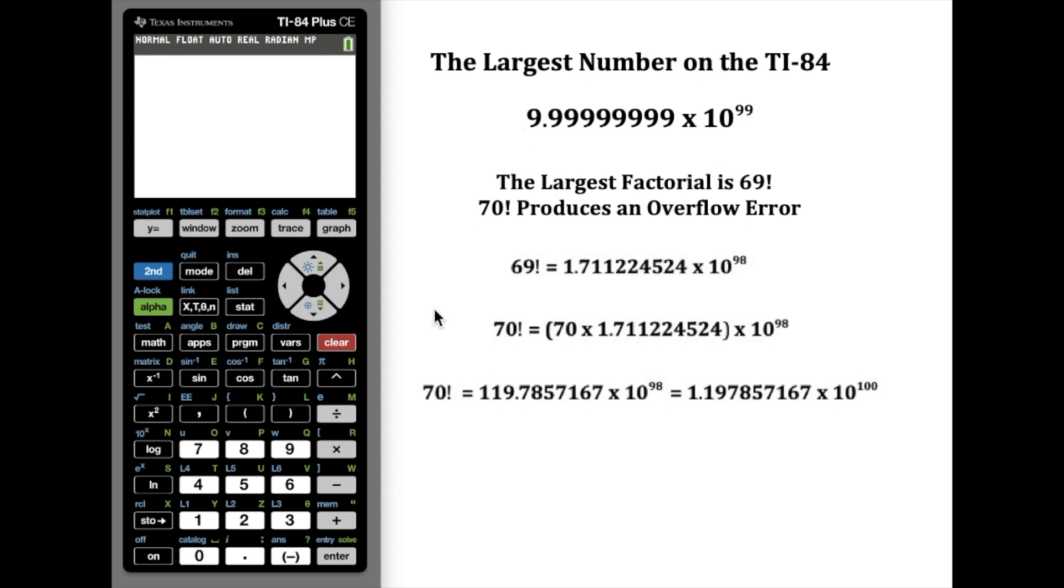You're going to encounter really large numbers when you're dealing with factorials. 69 factorial is actually the largest one that the calculator will hold. So I can do 69 and then if we do alpha F2 that's going to get us a shortcut to that factorial button really quick. As you can see in the calculator, it's going to be 1.711224524 times 10 to the 98.